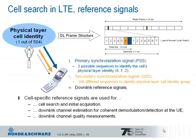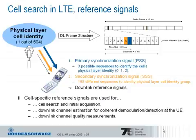The cell-specific reference signals fulfill three tasks: they are used for initial acquisition, coherent demodulation and detection at the UE, as well as for channel quality measurement. To estimate the channel's quality and help the eNodeB make a scheduling decision, the network informs the UE via system information about the power level at which the downlink reference signals are transmitted. The UE measures that power level, and the difference translates to a so-called channel quality indicator, a CQI value, which is reported back to the network.